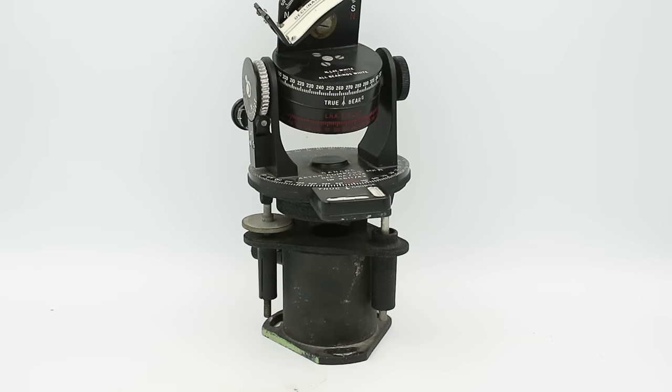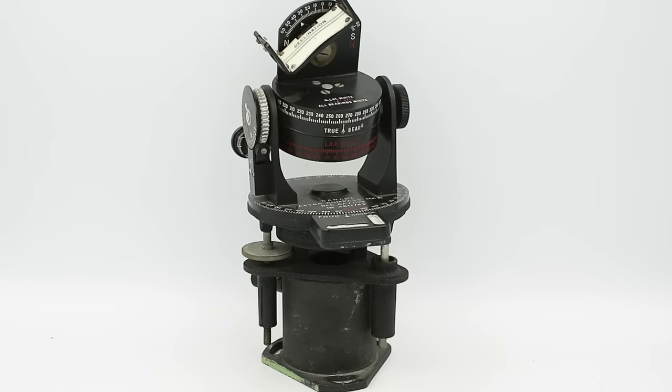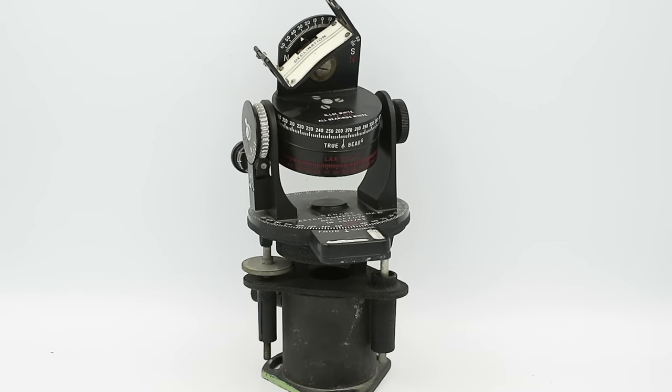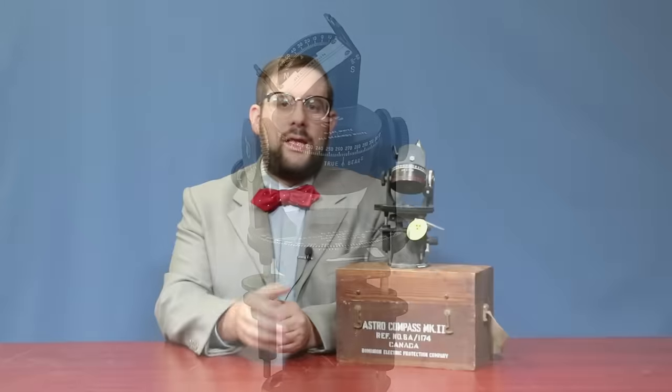This is an AstroCompass Mark II and this was adopted by the Royal Air Force in the mid-1930s and by other Allied forces during the Second World War and beyond. This allows you to determine the direction of true north via the positions of various celestial objects: stars, planets, the moon, and the sun.